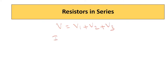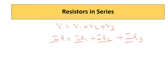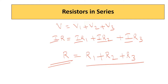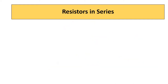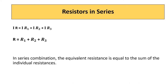According to Ohm's law, V is equal to IR. So IR equals IR1 plus IR2 plus IR3, and since I is the same everywhere, R is equal to R1 plus R2 plus R3. In series connection, the current is the same and voltage is different across each resistor. In series combination, the equivalent resistance is equal to the sum of the individual resistances.